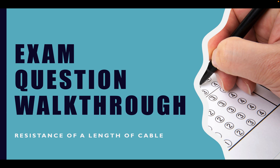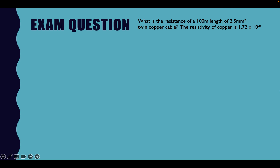Let's do an exam question walkthrough, and this time we're looking at resistance of a length of cable. Let's open the question up and read it together. What is the resistance of a 100-meter length of 2.5 millimeters squared twin copper cable? The resistivity of copper is 1.72 times 10 to the minus 8. So what formula do we need for this question?